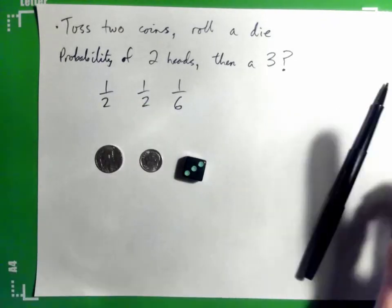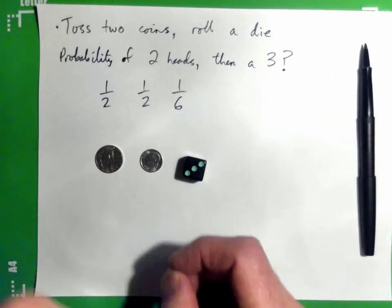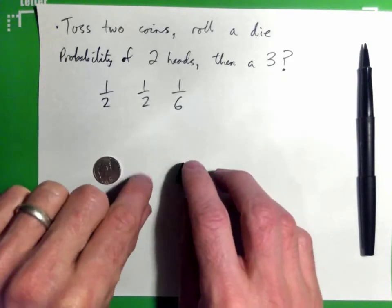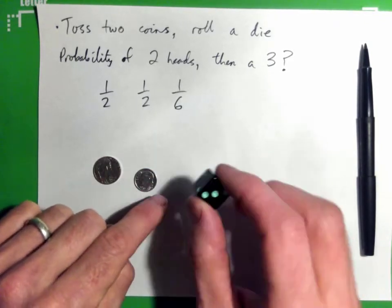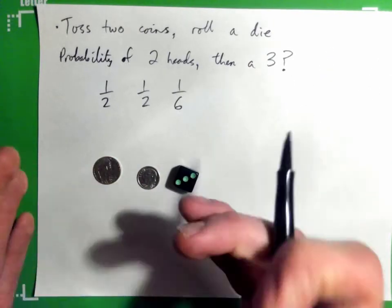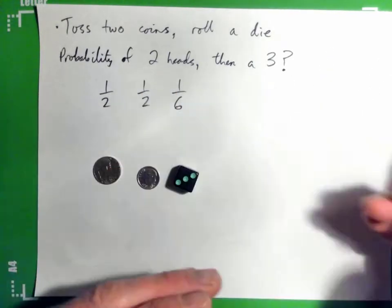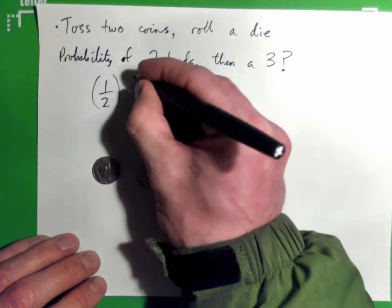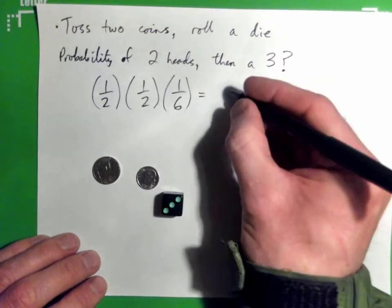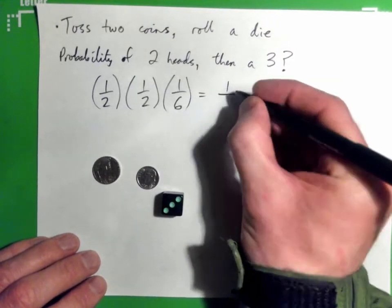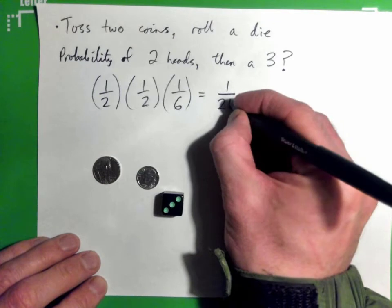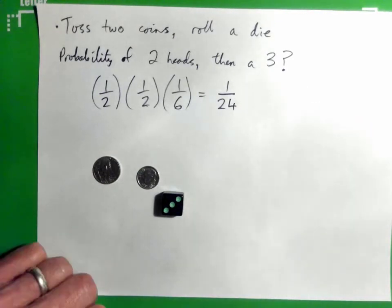These are all independent events, meaning the result of one coin doesn't change the outcome of the dice. When we want all of them to happen together, we simply multiply them: one times one times one equals one, and two times two is four, and four times six is 24. So the answer is one out of 24.